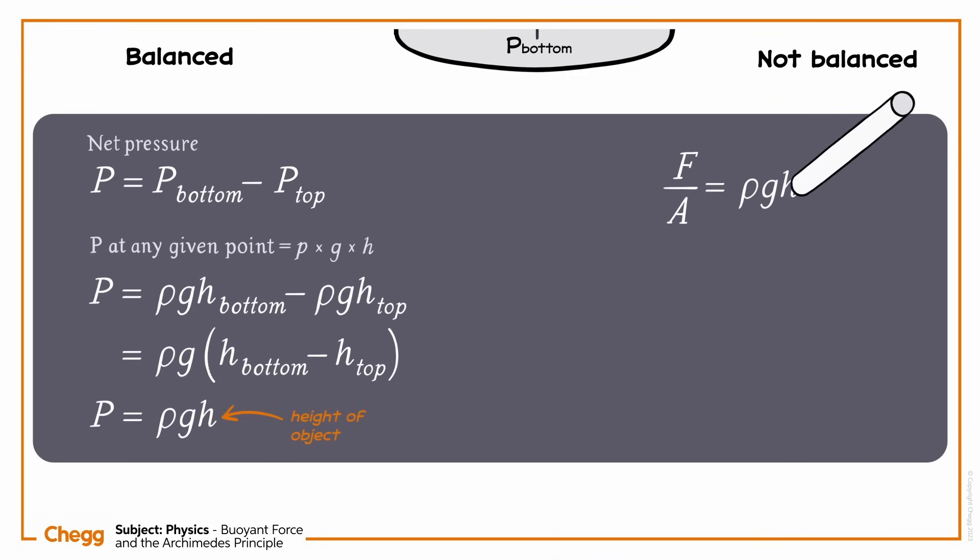Pressure P is equal to force F per unit area A. Let's substitute this in. Simplifying the equation one final time, we know that A times H is equivalent to the volume of the cube V.